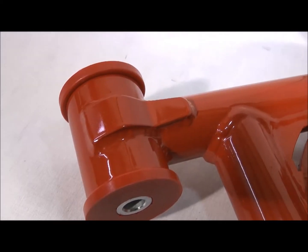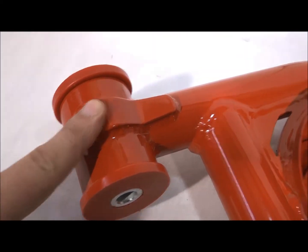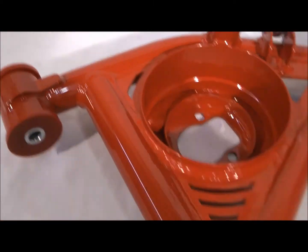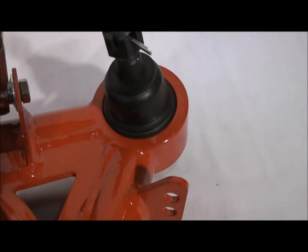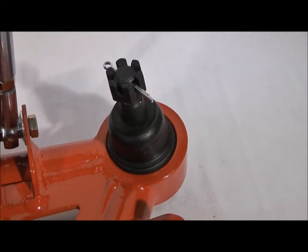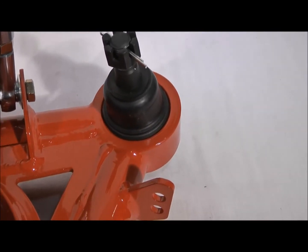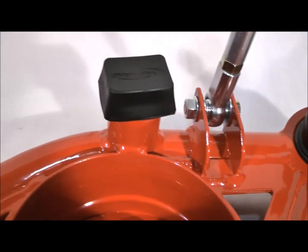These gussets, we tack weld the bushing tubes to the A-arm tubes and we also tack weld the ball joint tube up front there to the A-arm tubes. That's all tack welded.